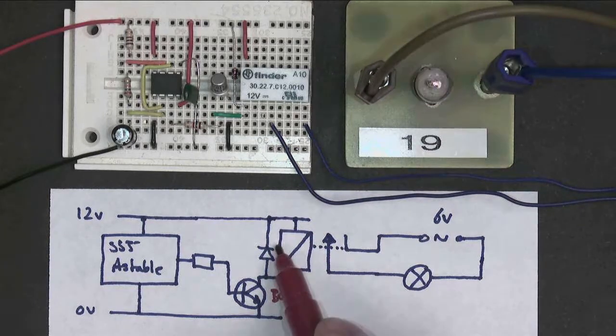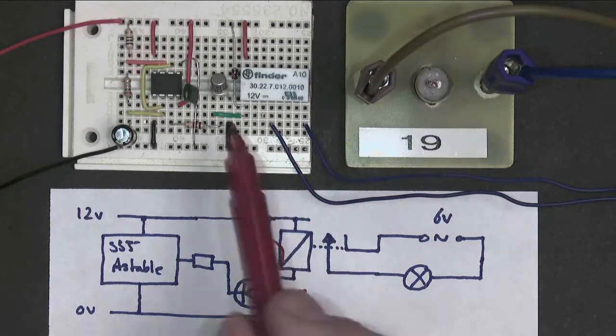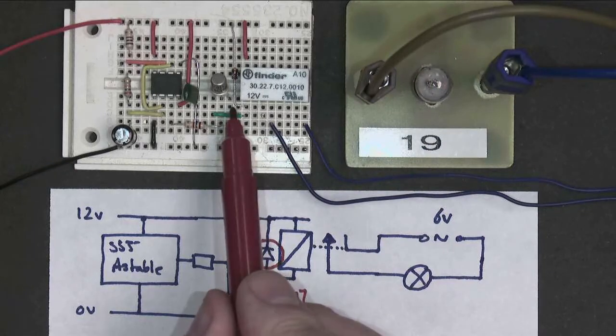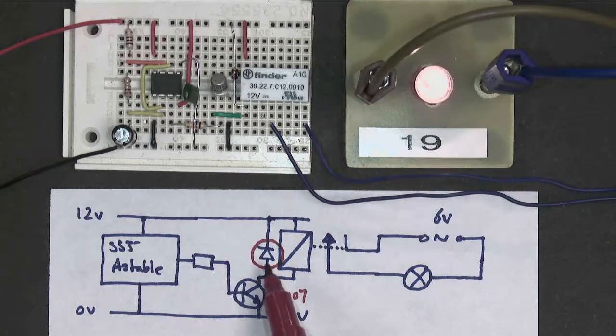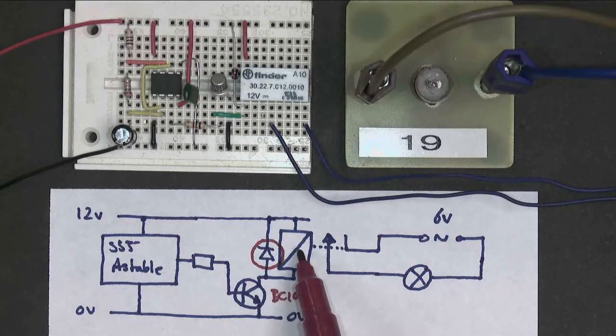And my protection diode, which is still essential, is now connected just here up to the positive rail. And this protection diode is now protecting the transistor from when the relay turns off.